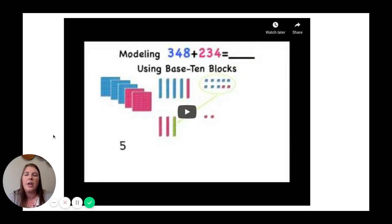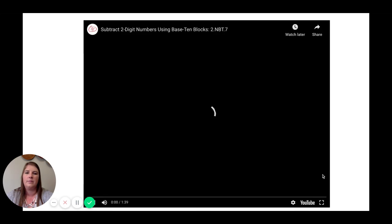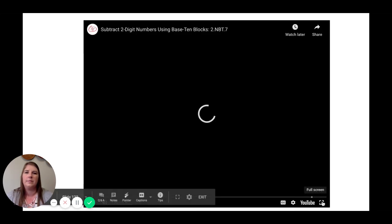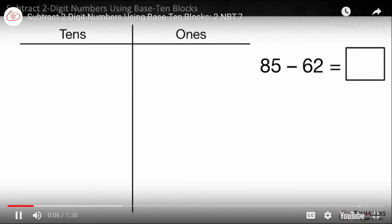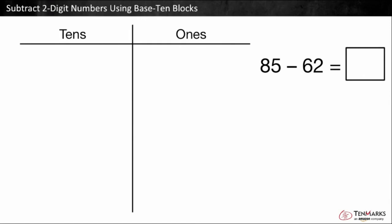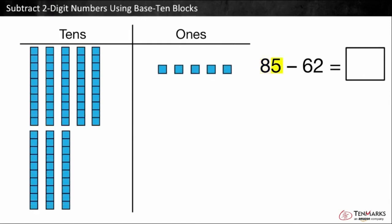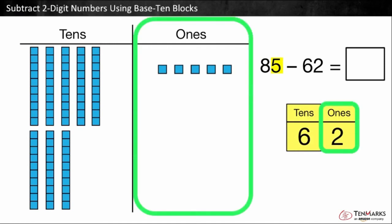So next, we are going to watch an even shorter video about how to subtract using base ten blocks. How can we use base ten blocks to subtract? Let's look at 85 minus 62. We can use base ten blocks to represent 85. Eight tens and five ones. Start by subtracting the ones. Can we take two ones away from five ones? Yes, five minus two is equal to three. We have three ones left.